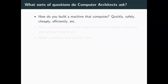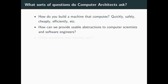Another way of thinking about computer architecture: how do we provide usable abstractions to computer scientists and software engineers? Nobody wants to program a web app in logic gates. Computer architecture fits in the gap between digital logic and something like an OS or programming languages — we're trying to get you from rocks that we pretend know how to think, and turn them into useful machines that computer scientists and software engineers can actually use.